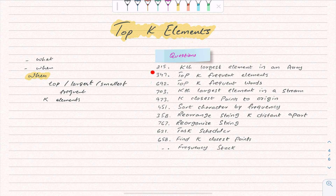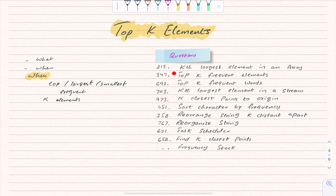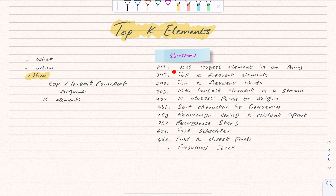Whenever a question asks for any number of top largest, smallest, or frequent key elements, we'll use the top K elements pattern. I've also mentioned a few questions from LeetCode — the number and their title. After going through this, you can try all those LeetCode questions yourself, and we'll solve each one by one in upcoming videos.